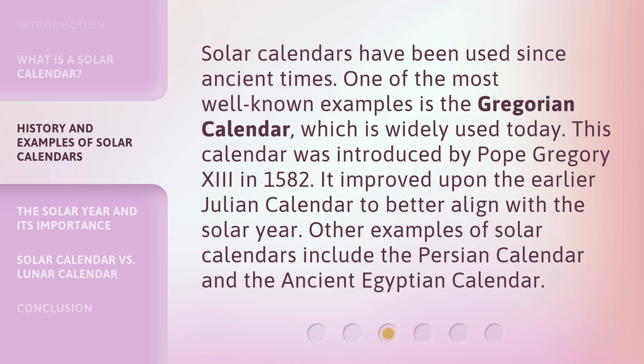This calendar was introduced by Pope Gregory XIII in 1582. It improved upon the earlier Julian calendar to better align with the solar year. Other examples of solar calendars include the Persian calendar and the ancient Egyptian calendar.